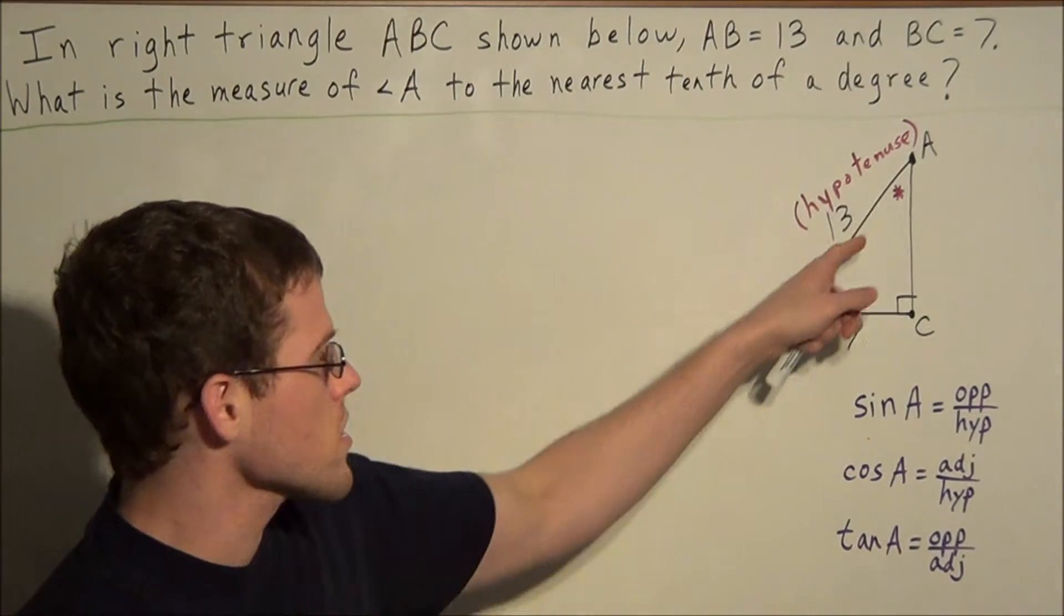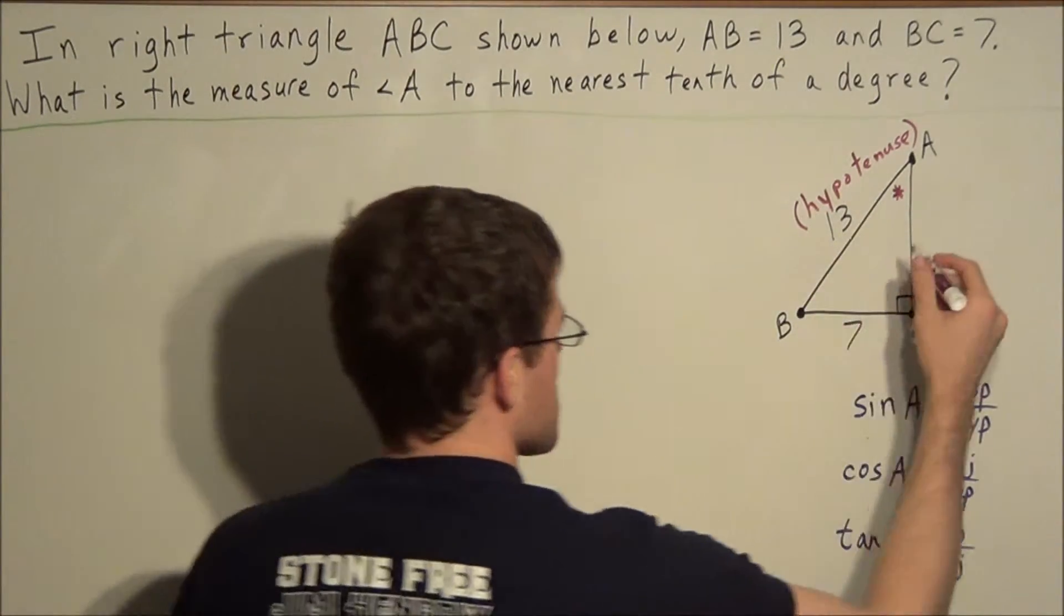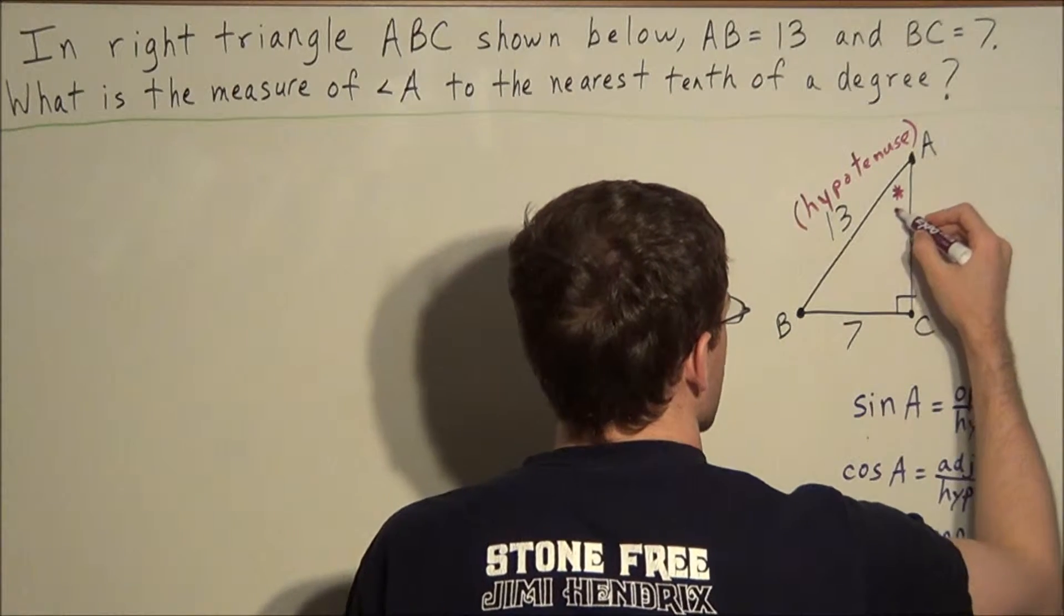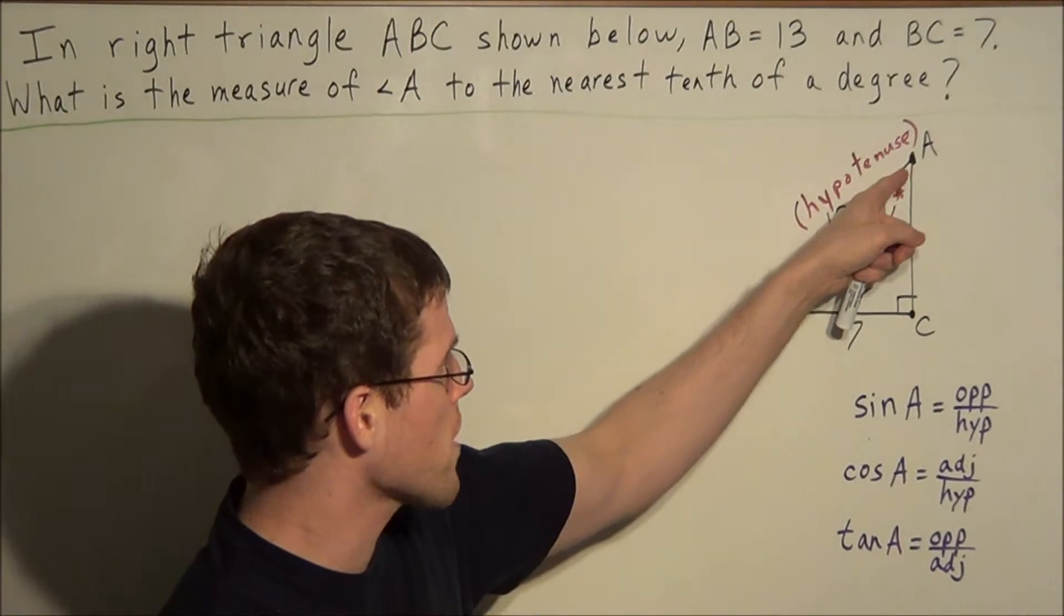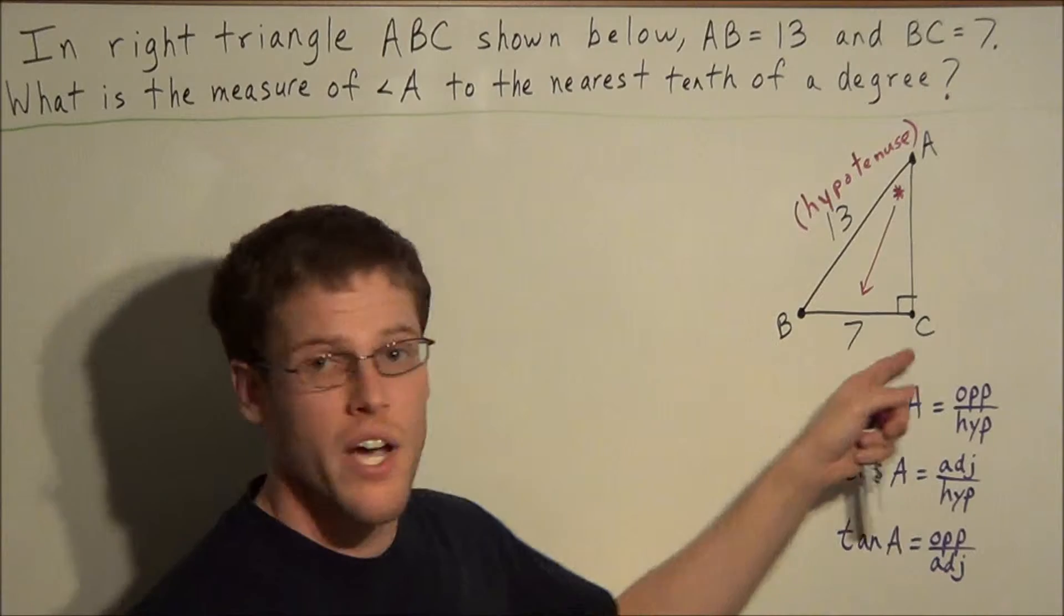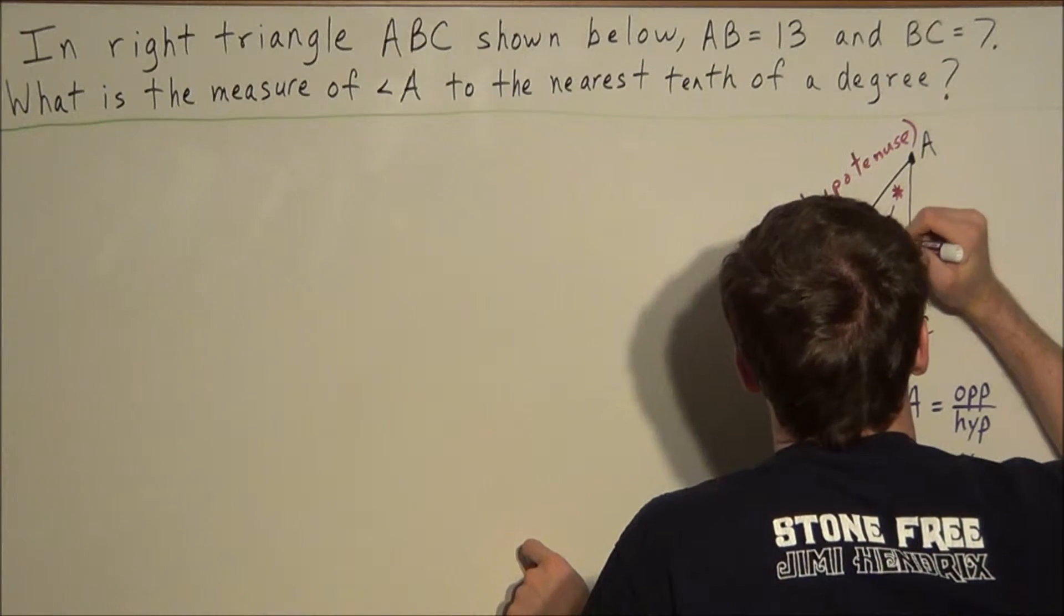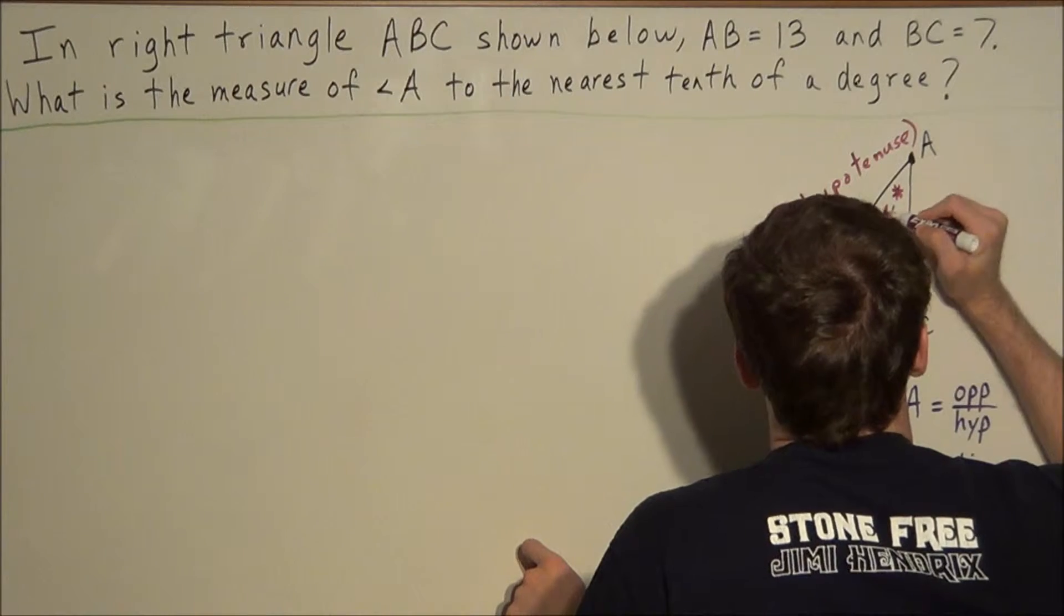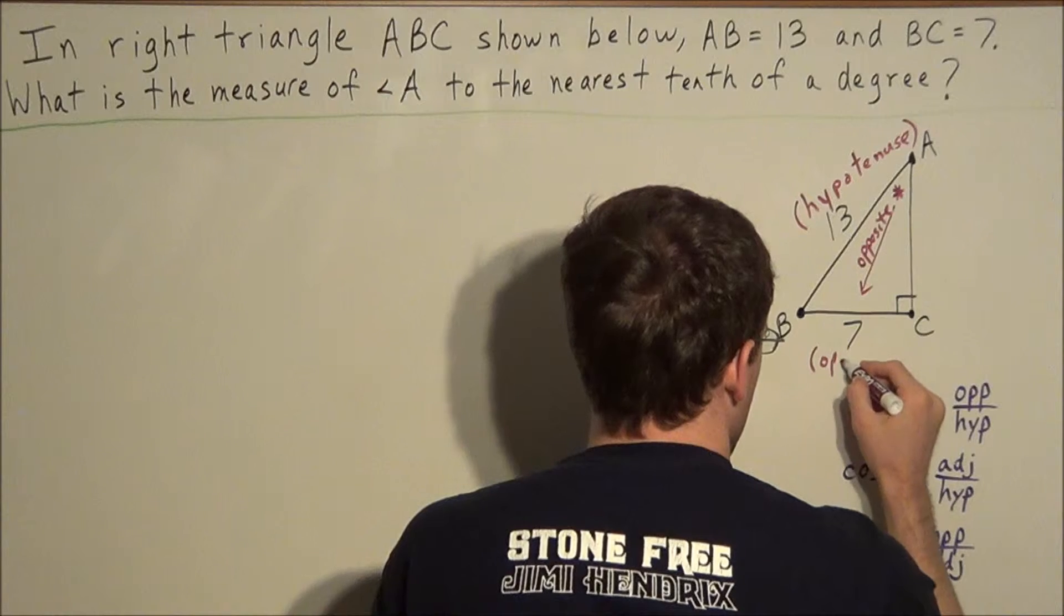And now, next, if we're looking at angle A, notice that this side here, BC, would be opposite of angle A. And one way to get a visual of this is to draw an arrow through the angle, and notice what side it points to—it points to side BC. So we know that this side is opposite angle A. So if we want to label it down here too, side BC is opposite angle A.